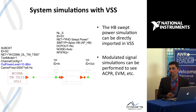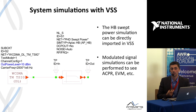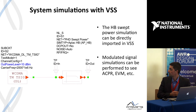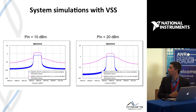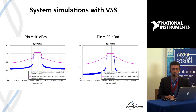Another feature is the ability to use XMP files to populate the polynomial model that can be used in system simulations with VSS. Here is a simple example of ACPR measurements as a function of power using this type of data.